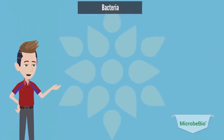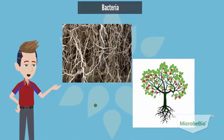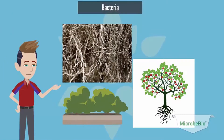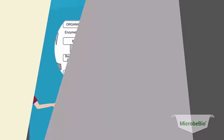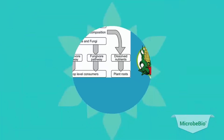Bacteria's function in the symbiotic relationship with the plant's roots is to carry out specific functions. One of these functions is to decompose different organic matters, which are then released for the plant's use when the bacteria's lifespan ceases.